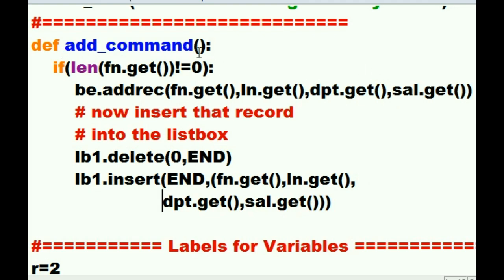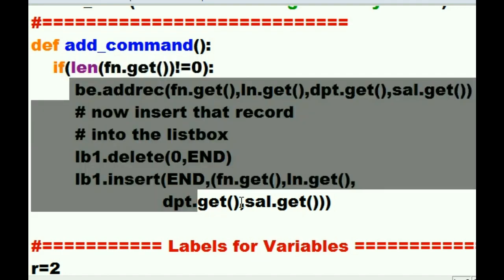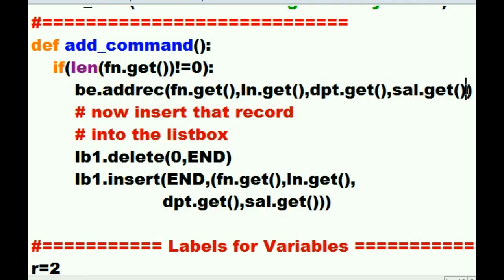So in this add command function, when it gets executed, it goes and gets the first name field data. Gets the length of it. If it's not equal to zero, it'll do all of this. It will get the salary, department, last name, and first name data. Hand it over to the add rec function, which is in the BE file. And it inserts that into the database.